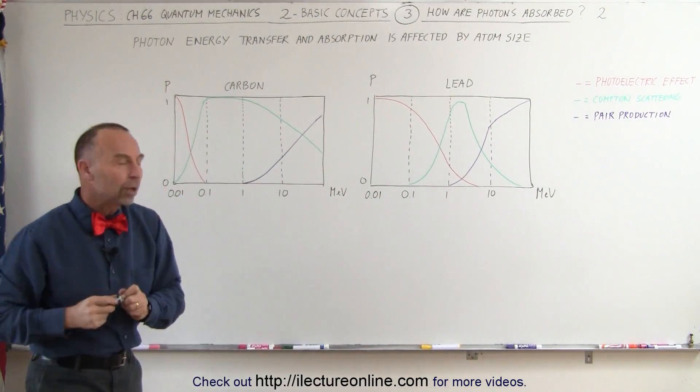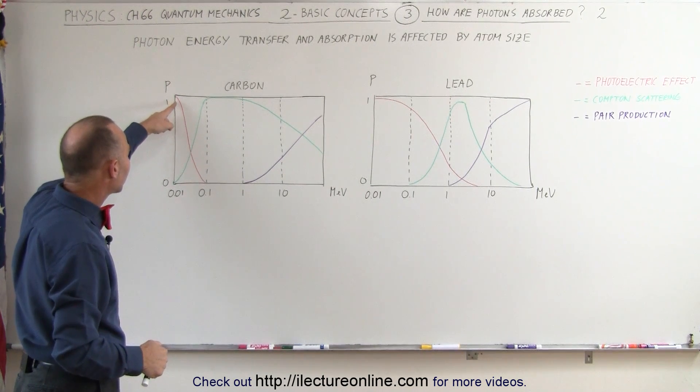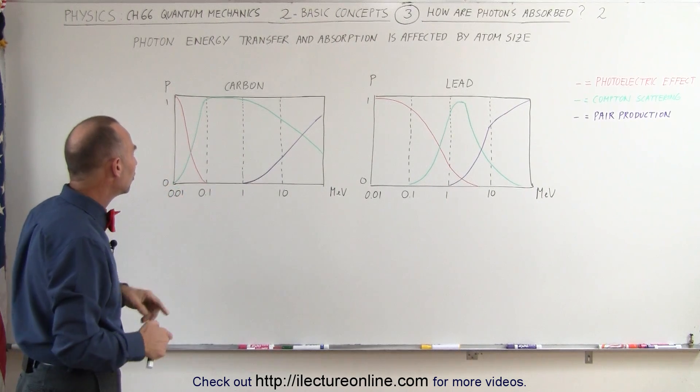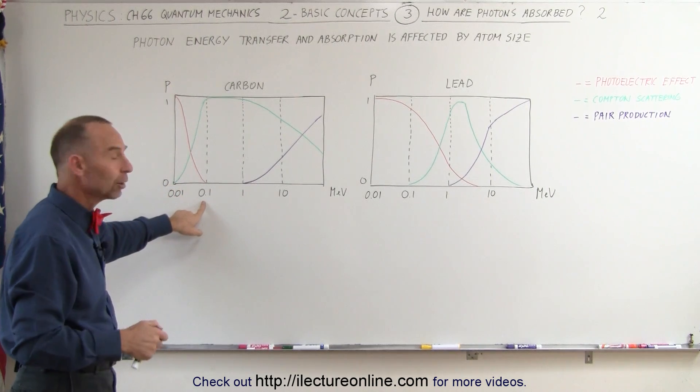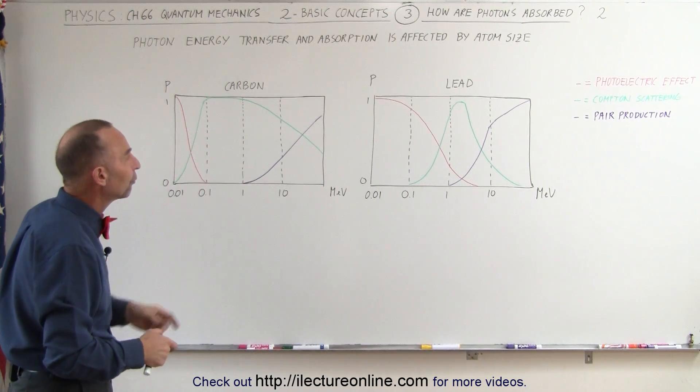But then notice the difference. Let's take it one at a time. Here you can see that the photoelectric effect sharply decreases with increasing energies when by the time we get to 100 kiloelectron volts, there's no such thing in carbon atoms as the photoelectric effect.